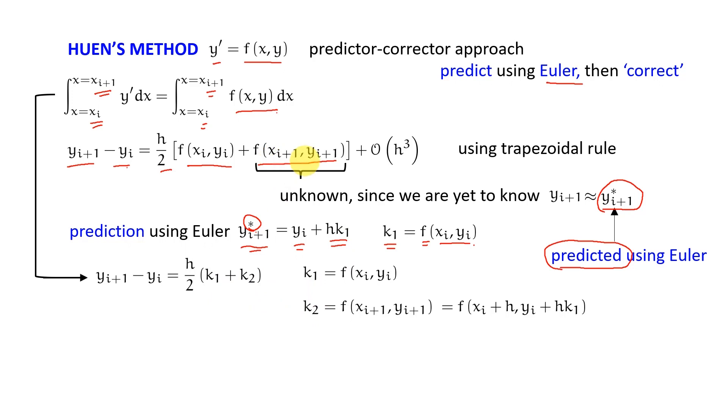And what I do here, I take this xi, yi as this star value. So now the rule becomes yi+1 - yi = h/2(k1 + k2), where k1 is the usual f(xi, yi) and k2 is f(xi + h, yi + h·k1). This is coming from Euler: yi+1 = yi + h·k1.